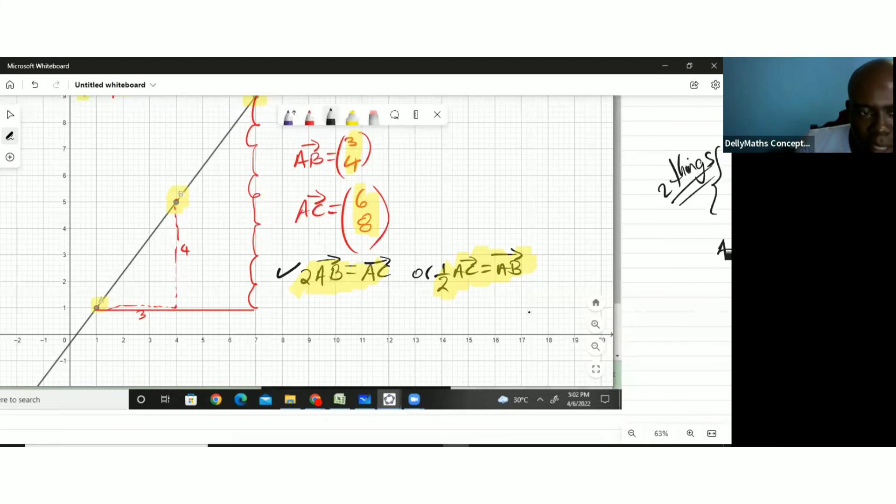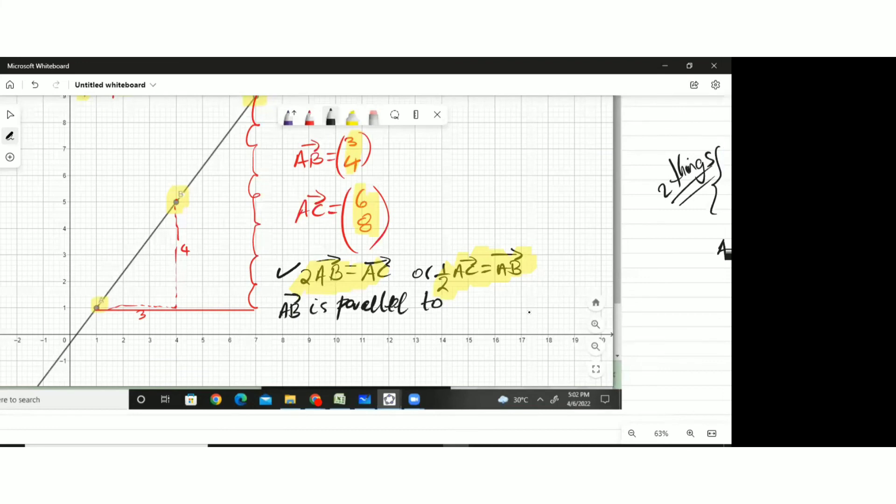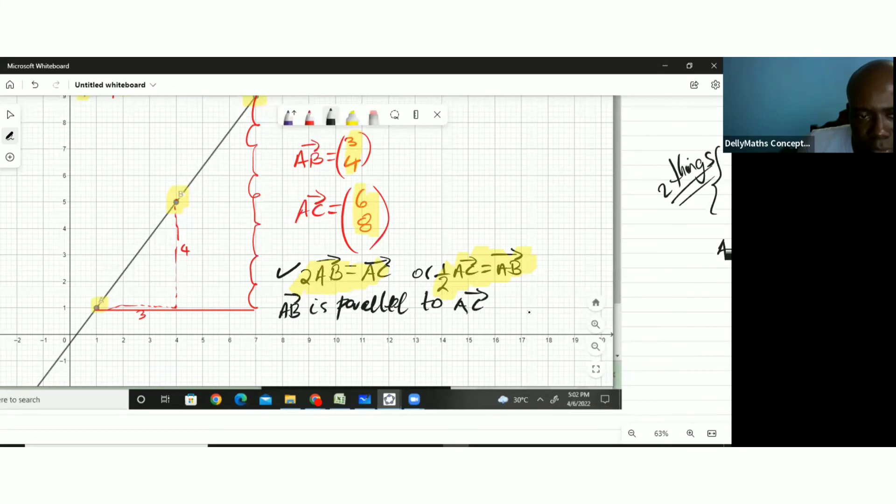You write a statement to show them that they are parallel. You write AB is parallel to AC, and they share a common point A. Done. That's it. It's over.